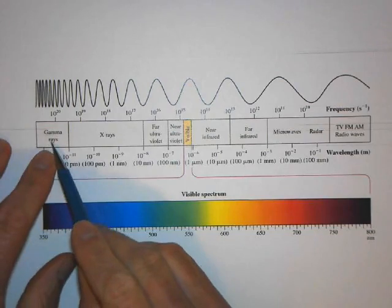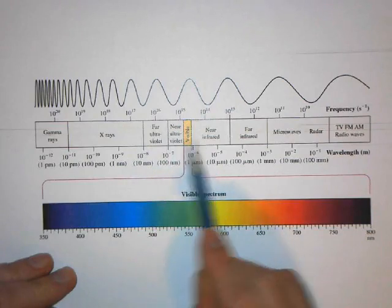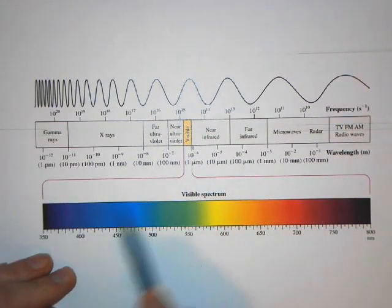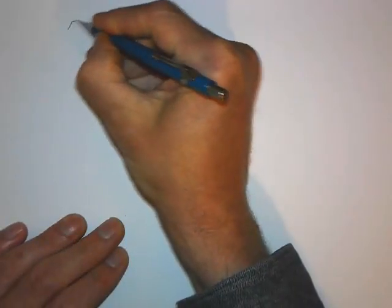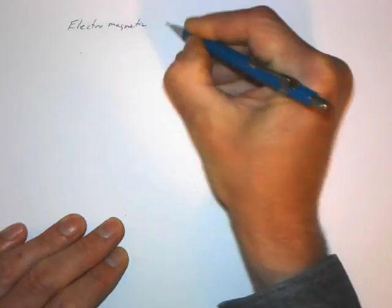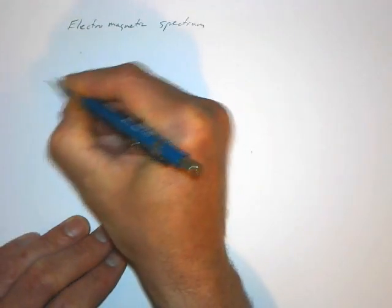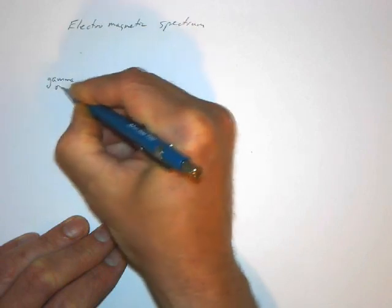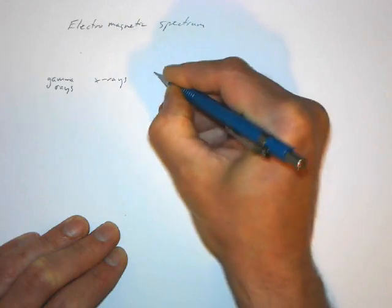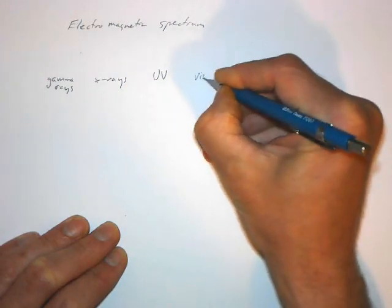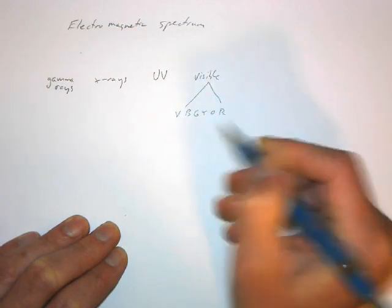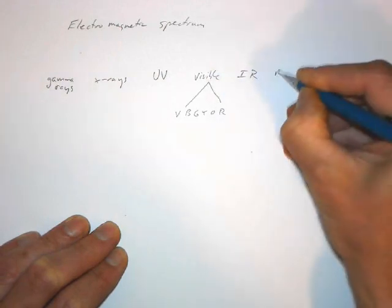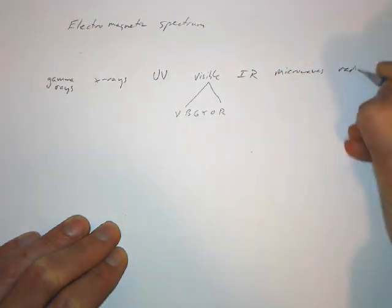So the electromagnetic spectrum consists of gamma rays, x-rays, and so on. And we go from there, ultraviolet rays, visible light encompasses just a very tiny portion of the electromagnetic spectrum. And then we have infrared, microwaves, radar, and so on. So let's look at this. This is the electromagnetic spectrum. We have gamma rays. We have x-rays. We have ultraviolet light. We have visible light. And that's going to go from violet, blue, green, yellow, orange, red. Then we have infrared. Then we have microwaves. And radio waves.